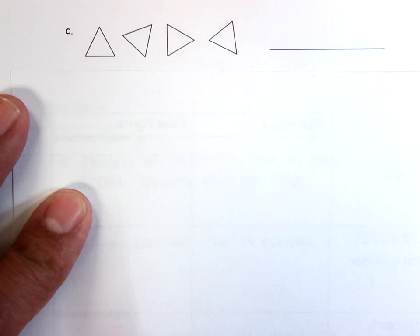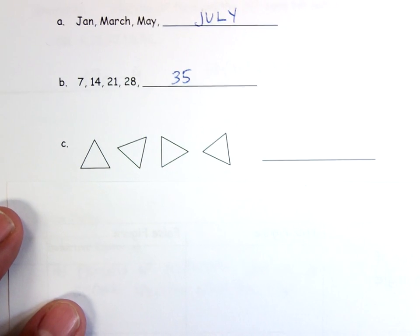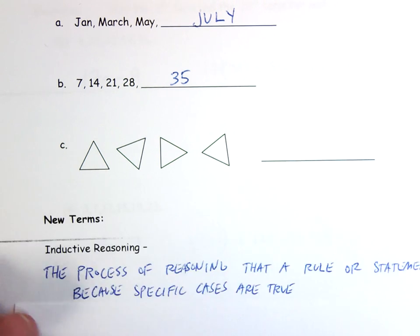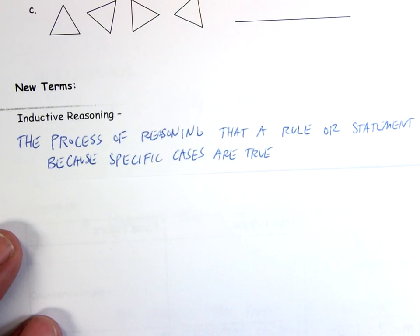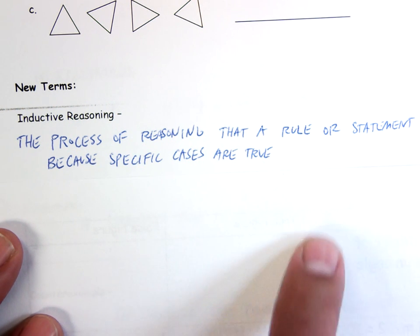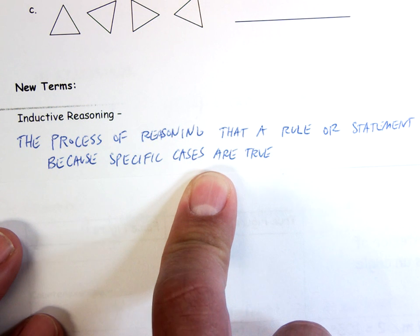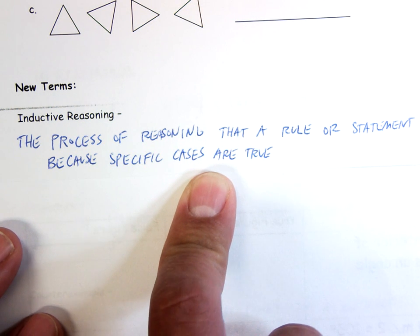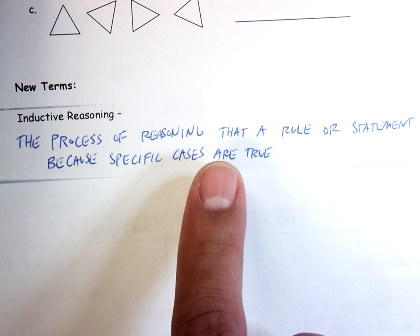So what did we just do? What kind of thinking did we use to get these next couple of terms? We call it inductive reasoning. It's the process of reasoning that a rule or statement is true because specific cases are true. It's pattern-based — we look at a pattern and try to figure out what comes next.